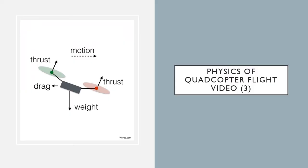I'm certainly no expert when it comes to the mechanics of flight, but there are people out there who are very knowledgeable. The next slide has a short video on the physics and mechanics of flight with a quadcopter — I strongly encourage you to check it out. It covers how the quadcopter stays aloft without moving in a specific direction and how the rotors change speeds to perform different movements.